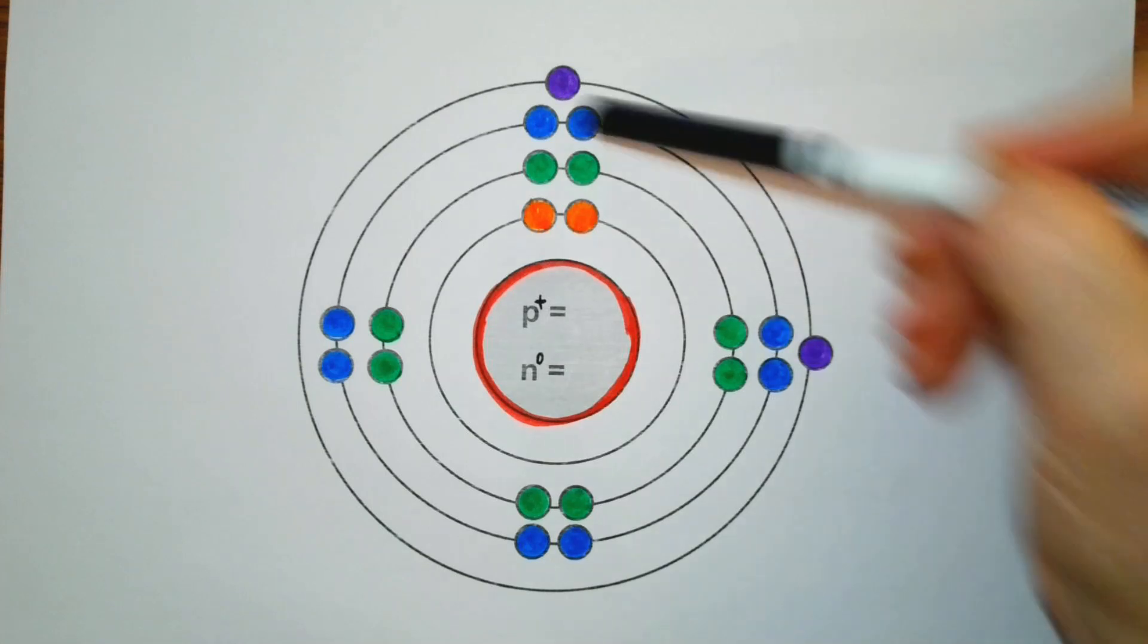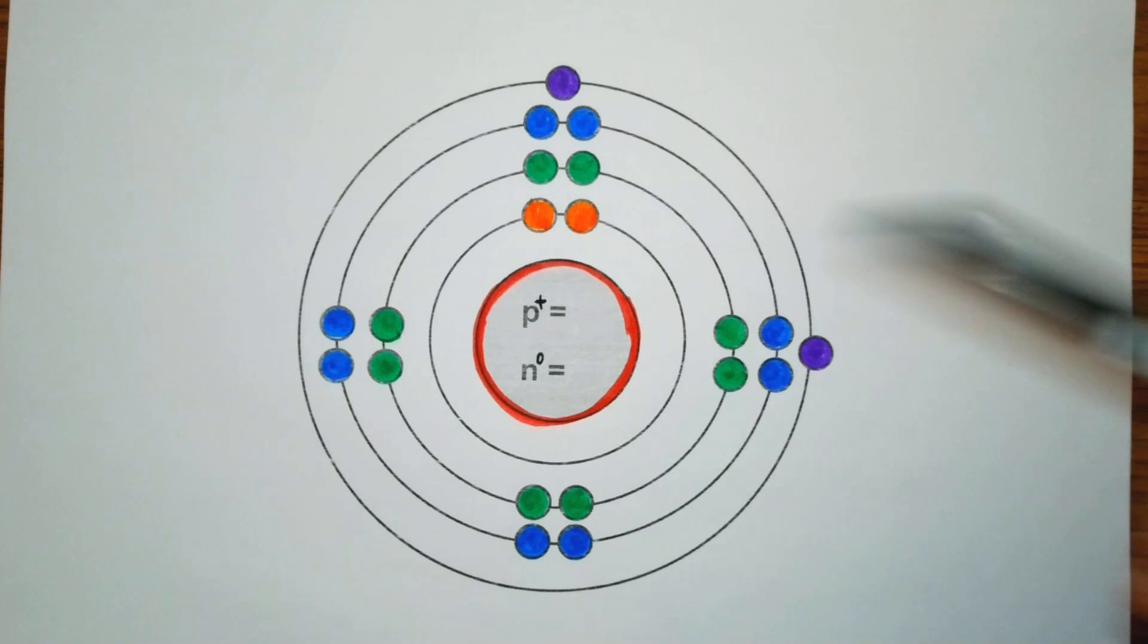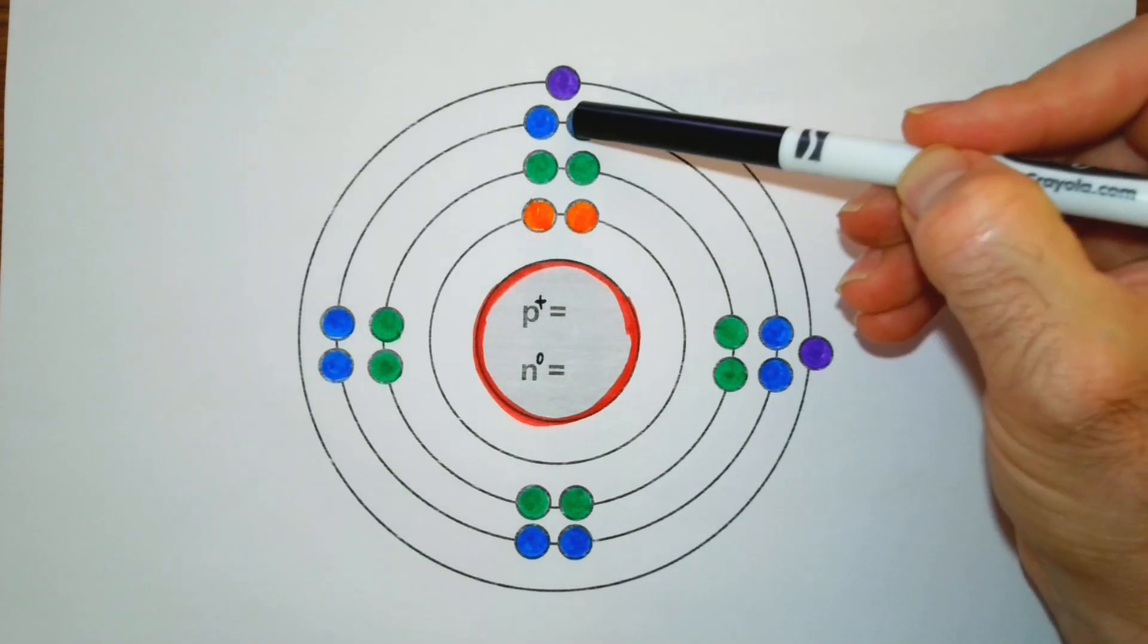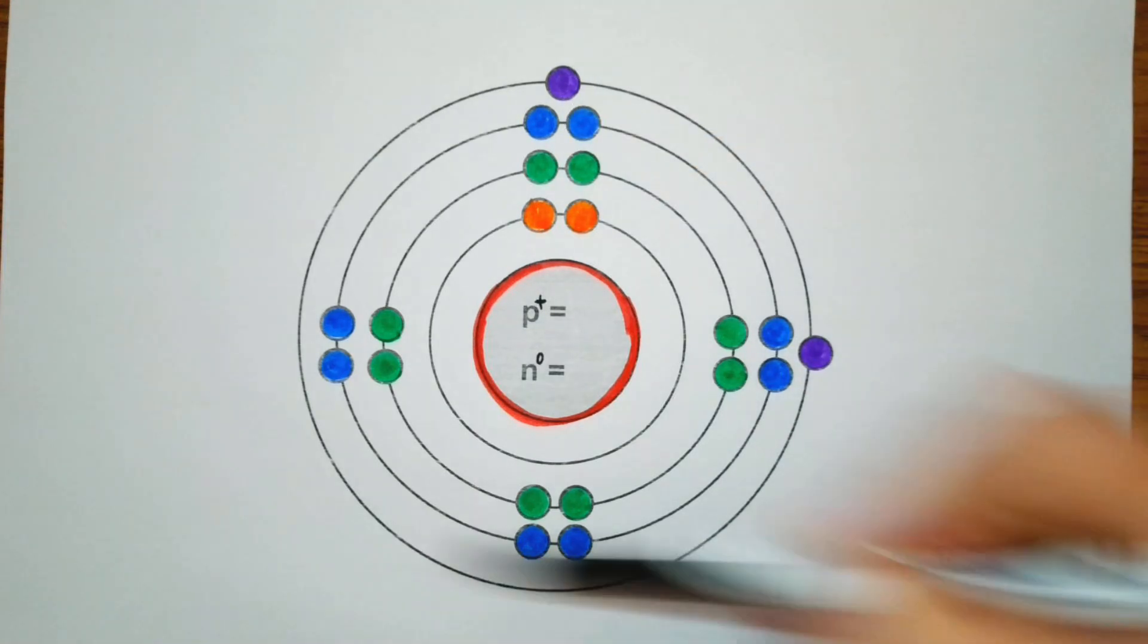The third orbital can hold a maximum of eight and they also do not start to pair until that fifth electron in that orbital: one, two, three, four, five, and then they start pairing up.